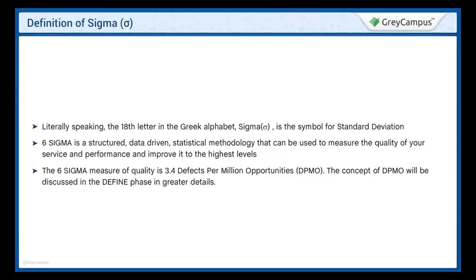In other words, 3.4 defects in 10 lakh opportunities. An opportunity is a term used to imply the chance of committing an error. It signifies that the accuracy level Six Sigma seeks to achieve is 99.9997 percent. The DPMO of 3.4 equals 99.9997 percent accuracy.